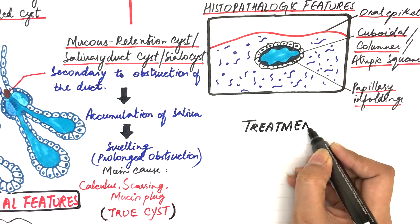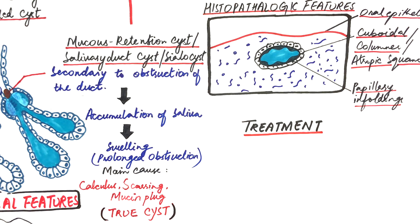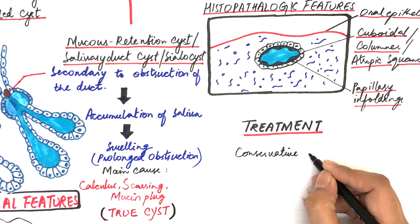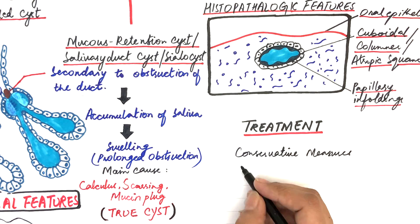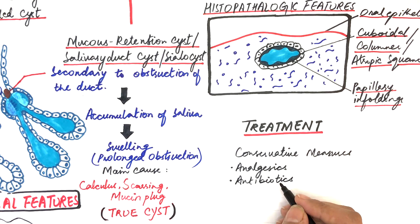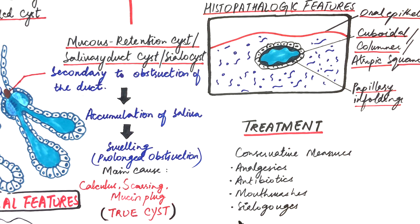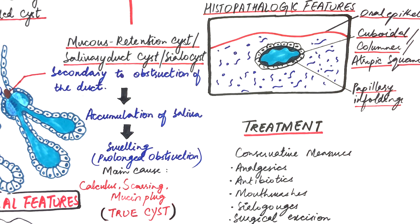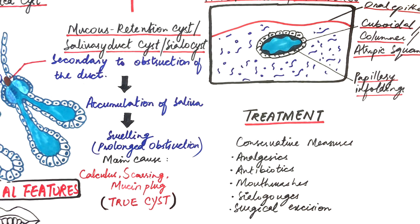The mucus retention cysts are best treated by conservative measures, like by prescribing analgesics, antibiotics if associated with inflammations, mouthwashes and shallow hooks. If the lesion does not dissolve with these measures, then the only option we have is their surgical excision.